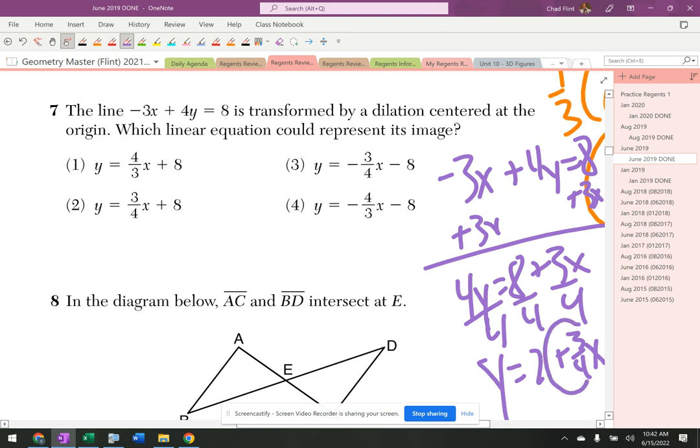3 fourths, 3 fourths, that's the answer. When I dilate a line, the slope always stays the same. I always get a parallel line or sometimes the same exact line.